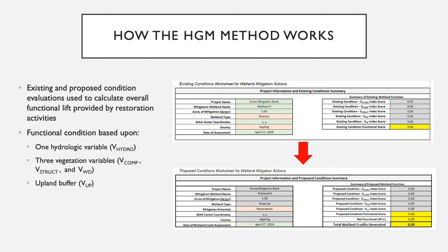To calculate both existing and proposed wetland functional condition, the Georgia HGM relies upon the quantification of five variables, which are a subset of those variables provided in the regional guidebook for applying the HGM approach to assessing wetland functions of forested wetlands and alluvial valleys of the coastal plain of the southeastern United States. The Georgia HGM relies upon one hydrologic variable — continuous saturation — three vegetative variables: wetland vegetation composition (Vcomp), wetland vegetation structure (Vstrup), and large woody debris (VWD). It also takes into account the condition and coverage of the upland buffer.